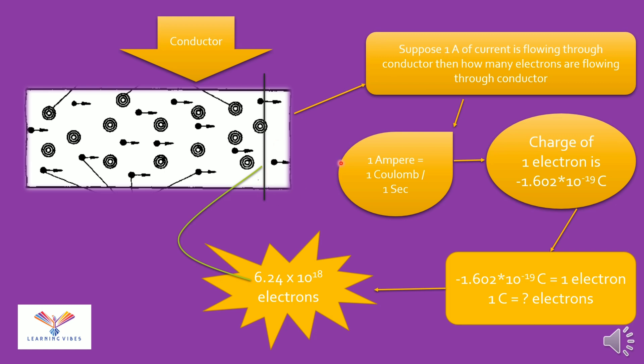So this is how you can calculate the number of electrons from ampere. This much of electrons flows when the current is of 1 ampere. Now if you want to calculate when current is 5 ampere and number of electrons is how much, then just multiply this number with 5 and you will get the answer.